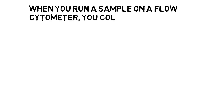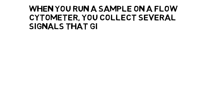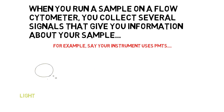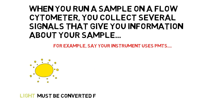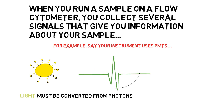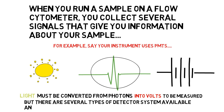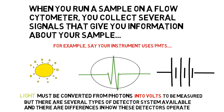When you run a sample on a flow cytometer, you collect several signals that give you information about your sample. For example, say your instrument uses PMTs. In this case, light must be converted from photons into volts to be measured. But there are several types of detector systems available, and there are differences in how these detectors operate.